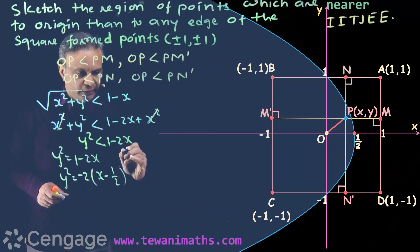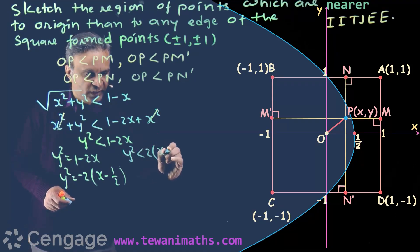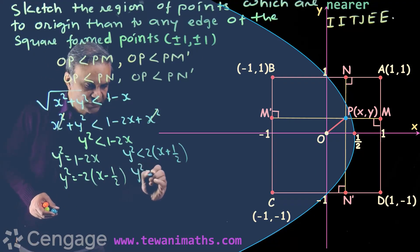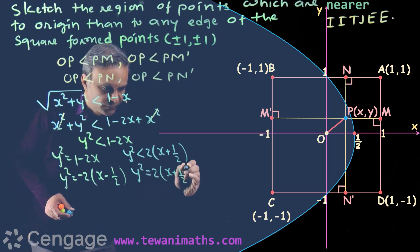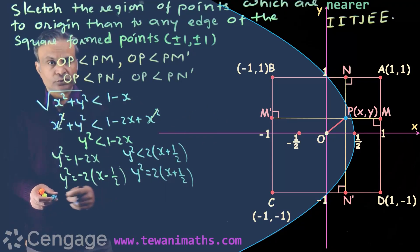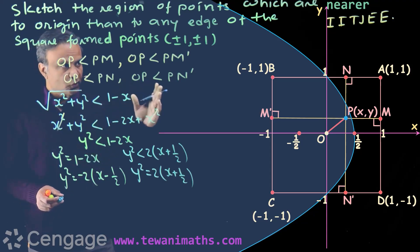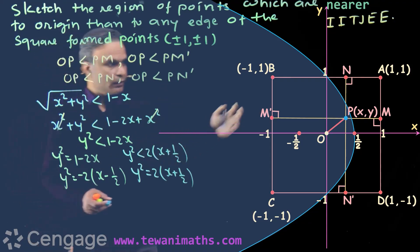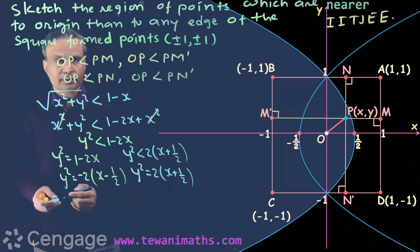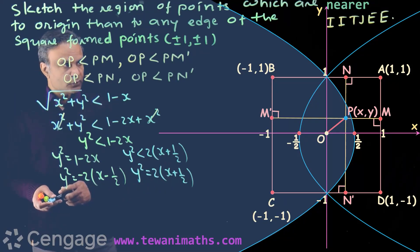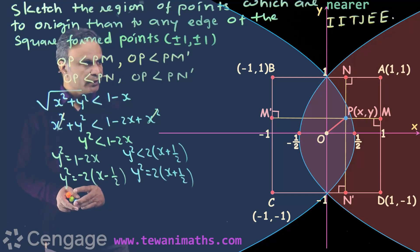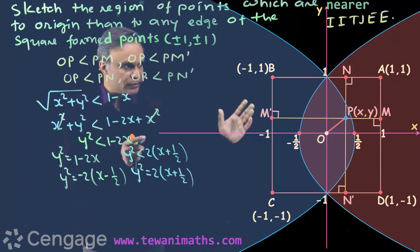From the next inequality we get Y squared less than 2 times (X plus 1/2). Point P will lie in the interior region of the parabola Y squared equals 2 times (X plus 1/2), which has vertex at (-1/2, 0). Putting X equals 0 gives Y squared equals 1, so the parabola intersects the Y axis at (0, 1) and (0, -1). This parabola opens towards the right because the coefficient is positive. The common region of these two interior regions is the intersection of both.